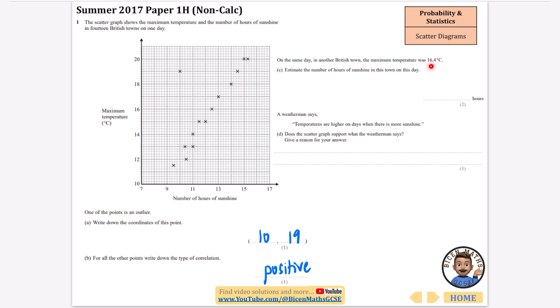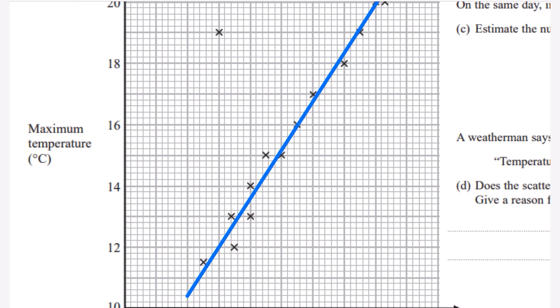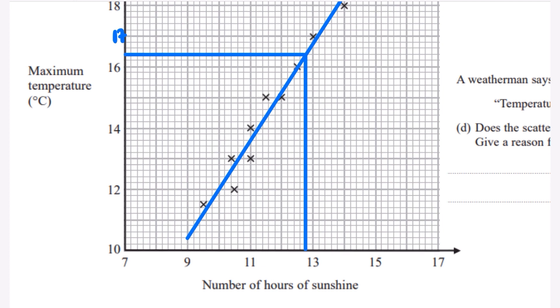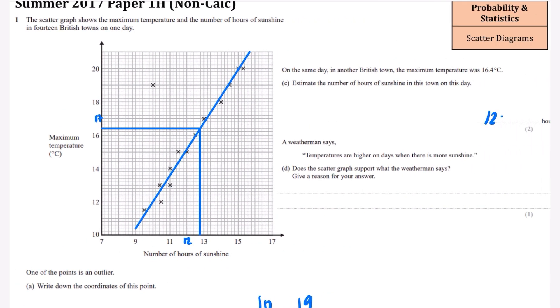On the same day in another British town the maximum temperature was 16.4. Estimate the number of hours of sunshine in this town on this day. Notice there are two marks, so you have to draw the line of best fit. I'm going to draw a line that tries to go through as many of these points as possible. 16.4 would be two squares along like this. I'd say that looks like it's about 12.8, so I'm going to say that it's 12.8 hours.